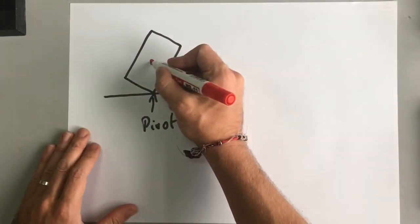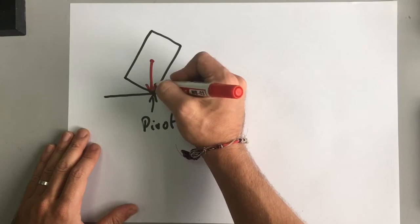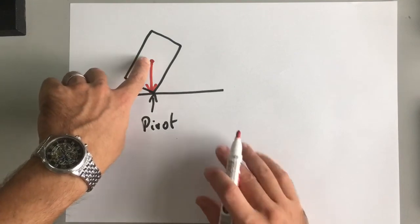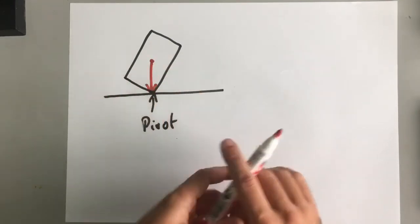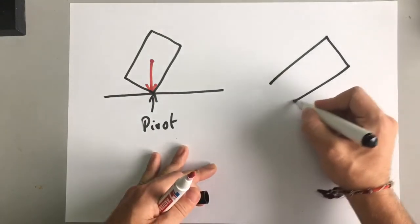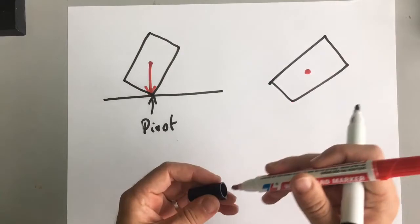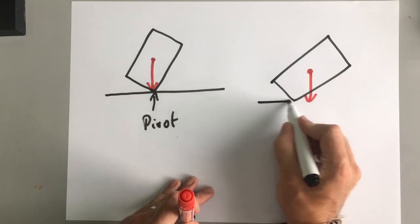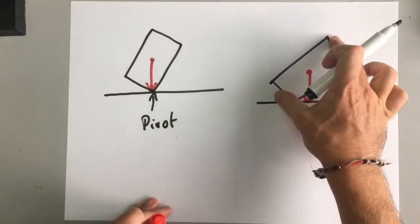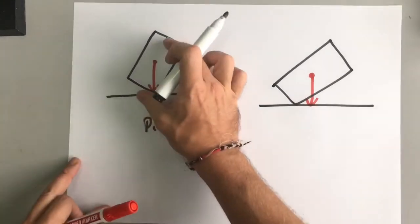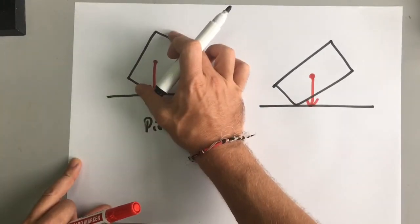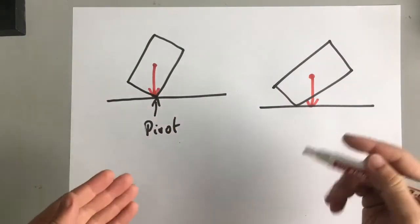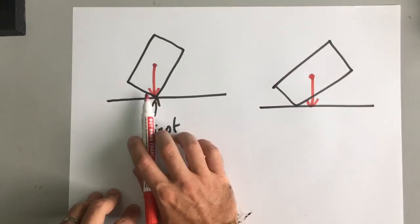If you draw a vertical line downwards from the centre of mass and it falls to the left of the pivot, then the moments are going anti-clockwise. If the centre of mass is to the right of the pivot, the overall moments are clockwise and the box will tip over. If the overall moments are anti-clockwise, it will tip back to how it was before.